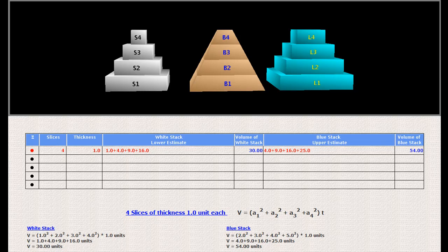Alternately, had its side been 2 units throughout, its volume would have been 4 cubic units, and this is the volume of the slab L4 shown on the right. The volume of B4 can be seen to lie between the volume of S4, that is 1 cubic unit, and the volume of L4, that is 4 cubic units.